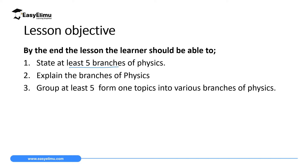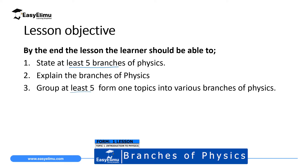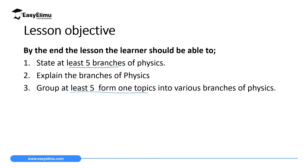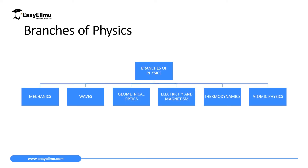I also expect you to group at least five form one topics into various branches of physics. In form one we have 10 topics, ranging from introduction to physics and measurement, to force, and then the tenth one is simple cell and circuit. I encourage you to find a list of the topics you are going to study in form one physics, and as we define and explain different branches of physics you will be able to group them into the branches in which they fall.